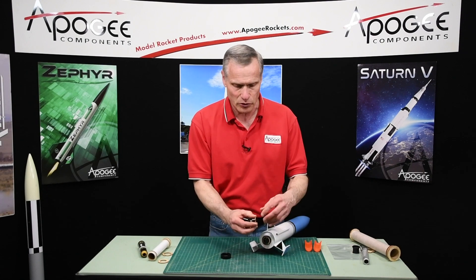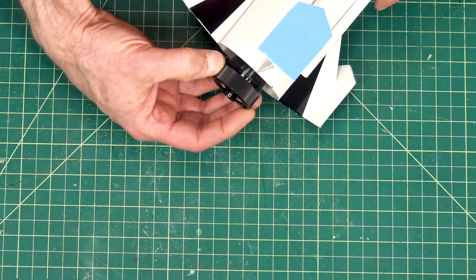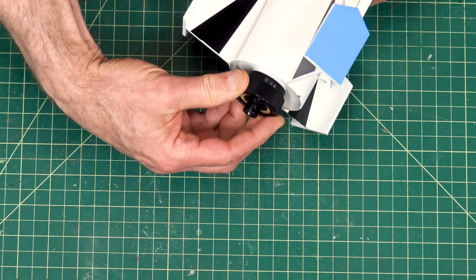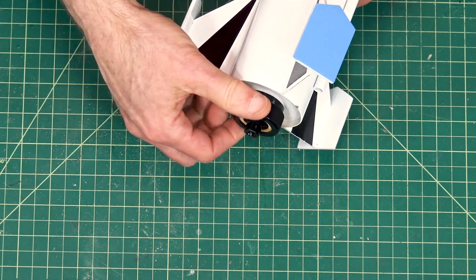What you do is you drop it into the cap like this, then you screw it on. And now your motor is in there nice and snug and it's not moving around on you.